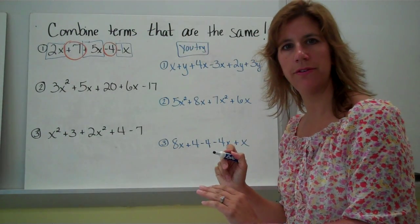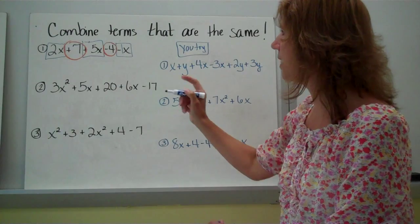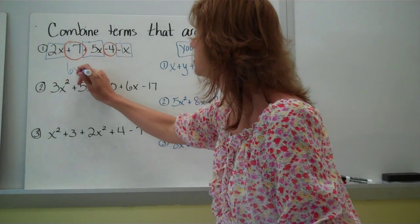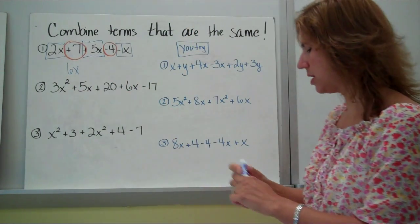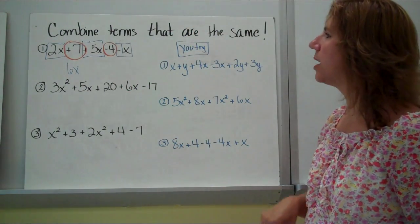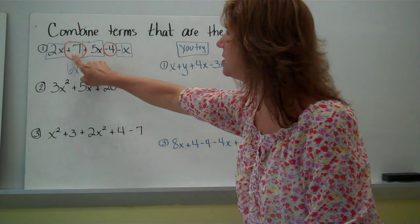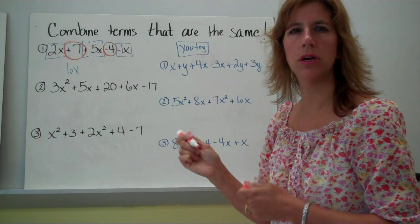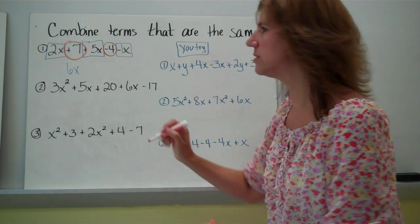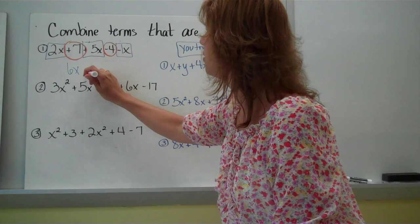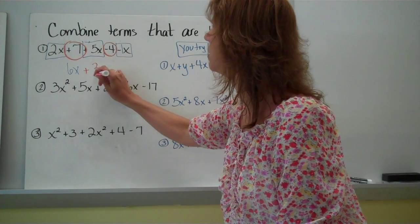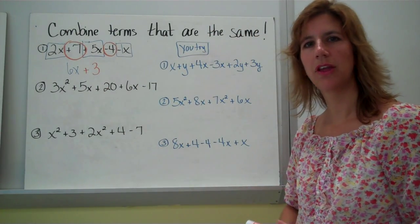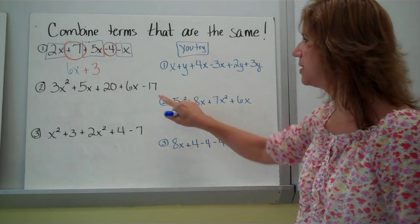So I'll put together all my x terms. I've got positive 2x and positive 5x — that's 7x — minus 1x. Remember, there's a 1 there — minus 1. So 2 plus 5 is 7, minus 1 gives me 6x. And then I'm going to do my constants: plus 7, minus 4. Plus 7 minus 4 is 3. So the answer is 6x plus 3.